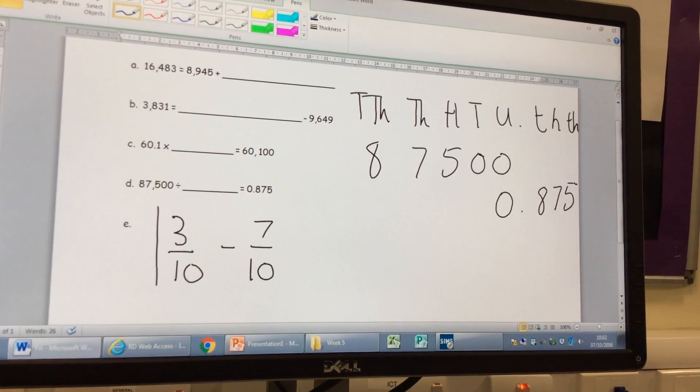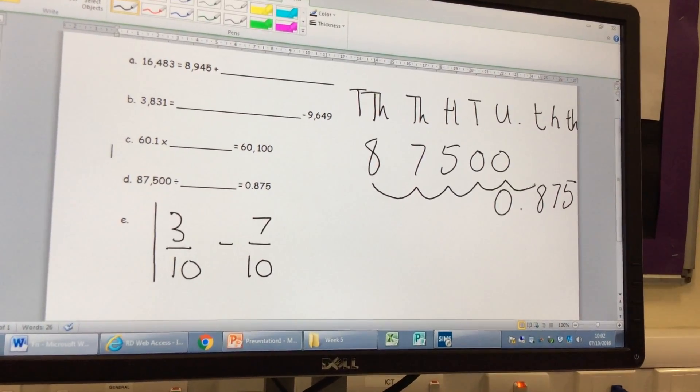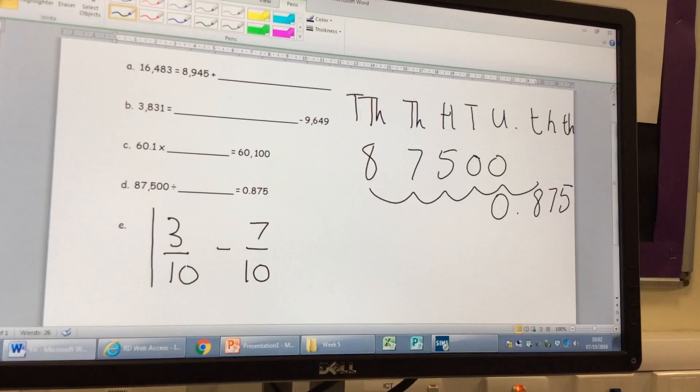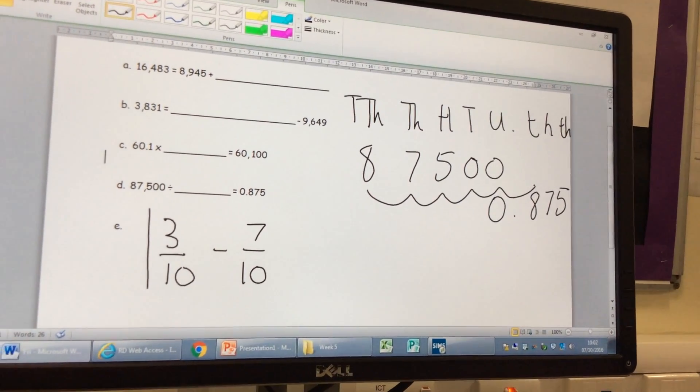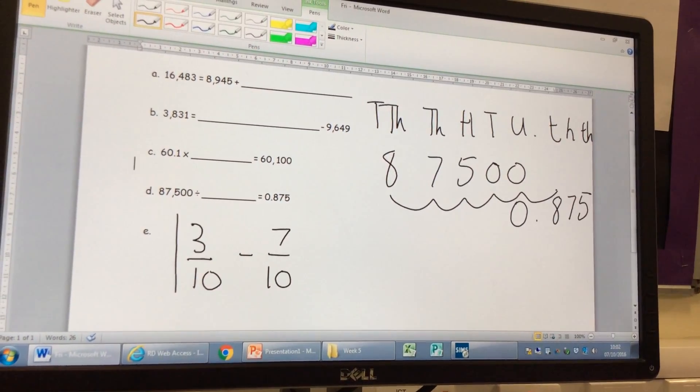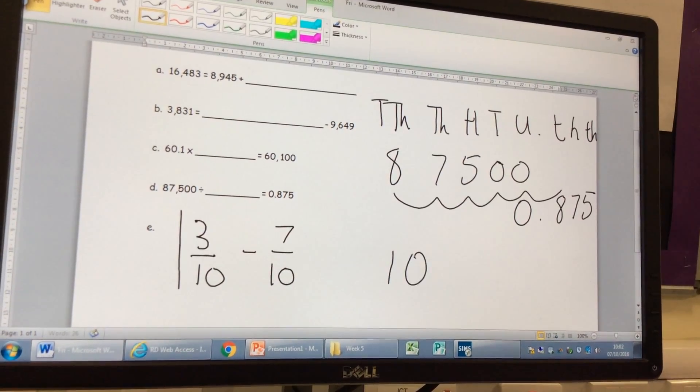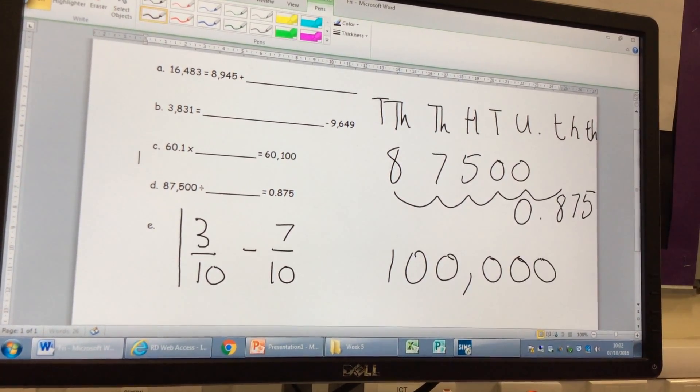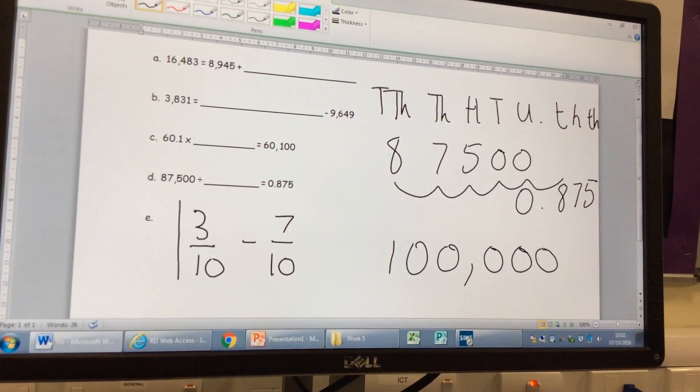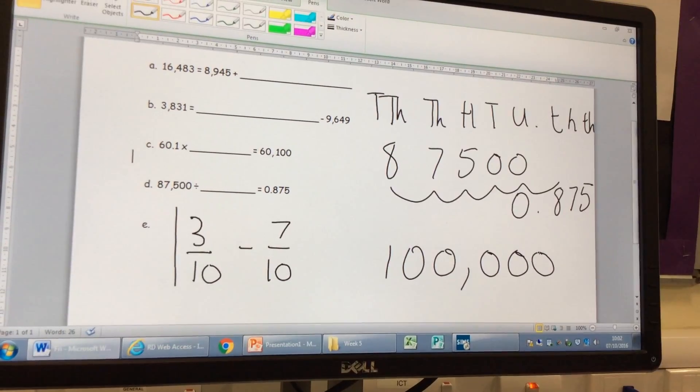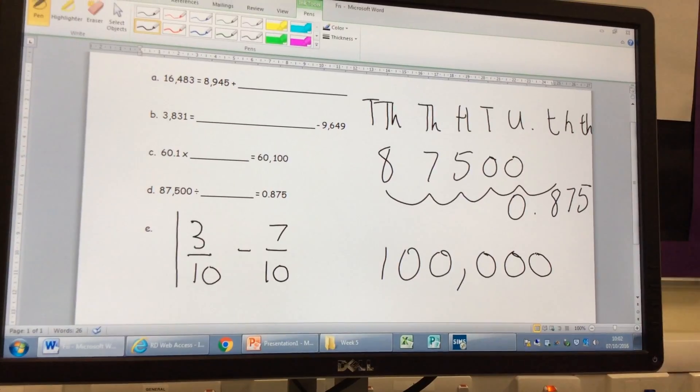five columns down this time. Five columns down this time. So what has it been divided by if it's gone down five columns, Olivia? 100,000. How do you know it's 100,000, Olivia? It's five zeros. Because there's five zeros in that number, which tells us that the digits are going to be pushed down five columns. Hands up if you've got that one right. Very good. Very good indeed.